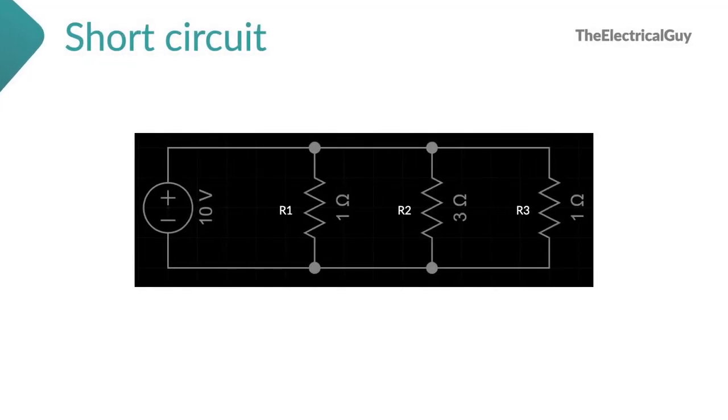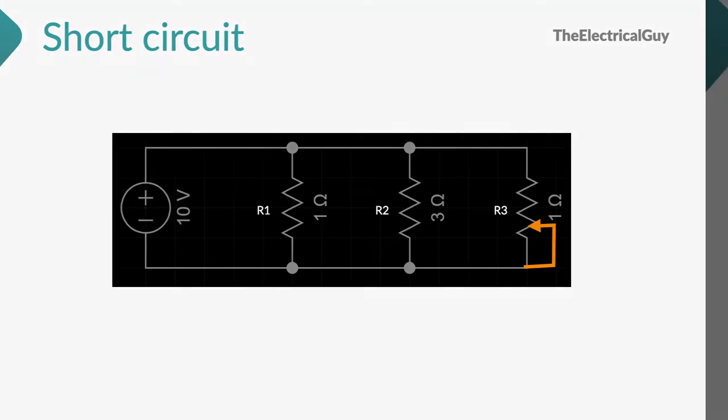Exactly opposite to that happens in case of short in a parallel circuit. Let's say there is a short here. Because of this short, total resistance of the circuit will decrease. As a result, total current of the circuit will increase and becomes very high than the normal current.